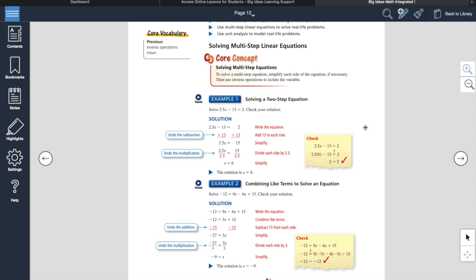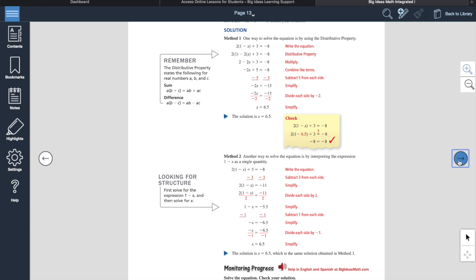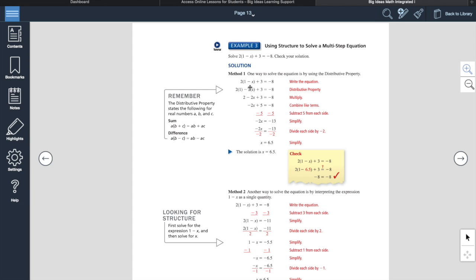So 1.2 is on multi-step equations. And again, it follows you through the examples there with the tutorials. Same thing here. Remember, you've got the distributive property. Where on this, you're going to take 2 and distribute it. So 2 times 1 is 2. Minus 2 times x is 2x. So it's 2 subtract 2x. Plus 3 equals negative 8. And then remember, you've got to get your like terms together. And finally, get everything to one side and get x on the other and solve for x.